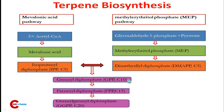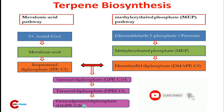Geranyl diphosphate, containing two C5 units, is the precursor of all monoterpenes. It links with another molecule of isopentenyl diphosphate to form farnesyl diphosphate, a C15 terpene containing three C5 units, which is the precursor of all sesquiterpenes. Farnesyl diphosphate then links with another IPP molecule to yield geranylgeranyl diphosphate, a C20 terpene and precursor of all diterpenes.